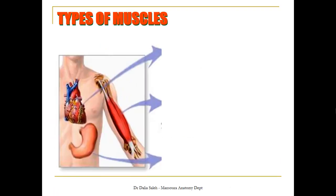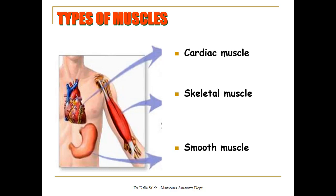If we look at this diagram, we have three different types of muscles in our body: the cardiac muscle, the skeletal muscle, and the smooth muscle.